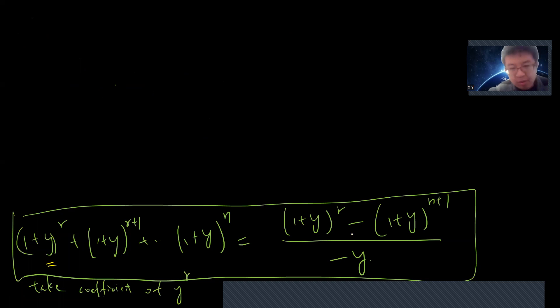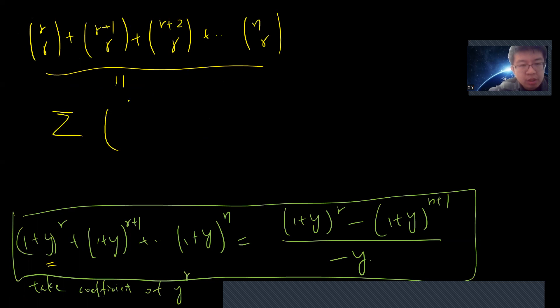So taking y^r, the first term is (r choose r), the second term is (r+1 choose r), the next term is (r+2 choose r), up to (n choose r). So these are basically the summation of (i choose r), from i=r to n.